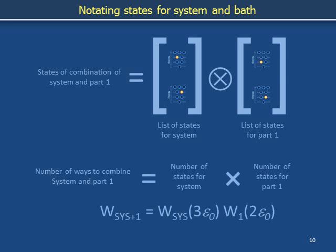The number of world configurations equals the number of states for the system multiplied by the number of states for part 1. We usually use the letter W to denote ways.